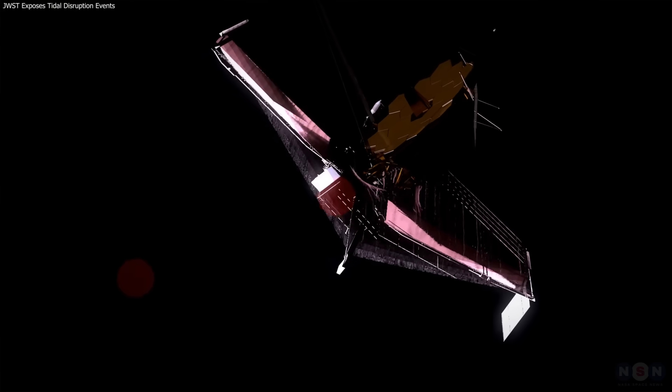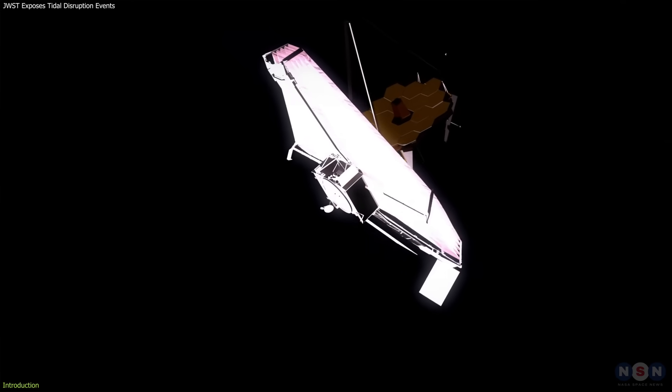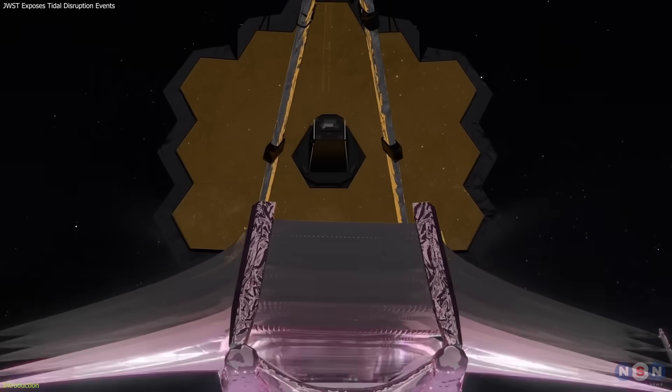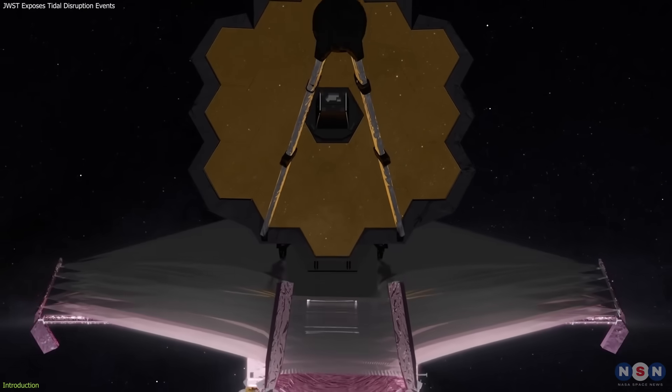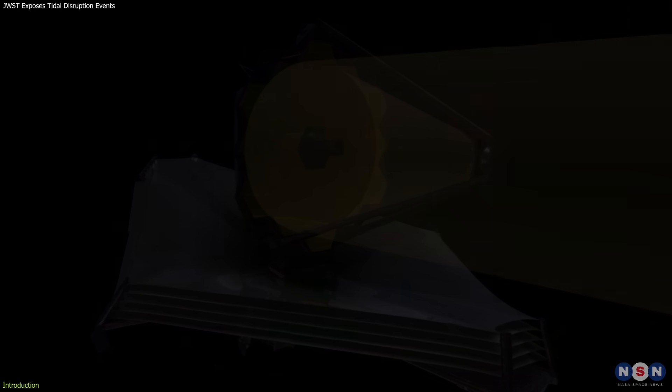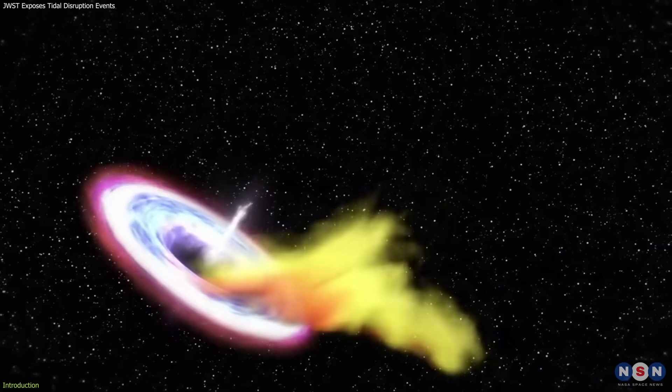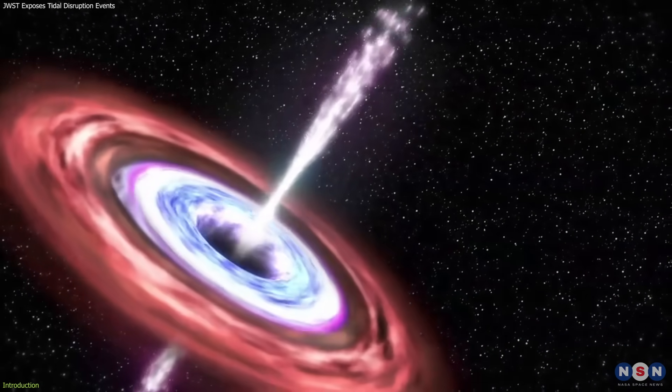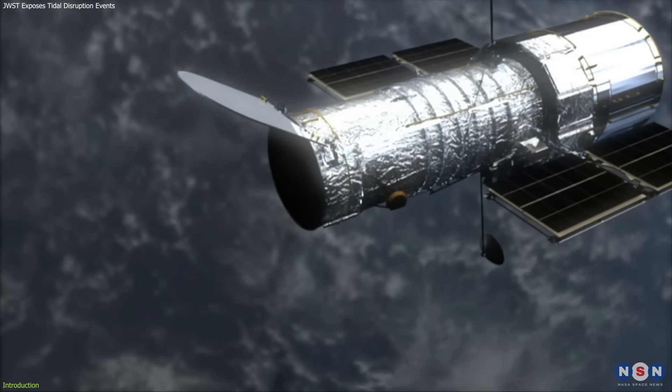After our previous JWST black hole series, here's the latest. Astronomers have used JWST's infrared eyes to spot dormant black holes flaring to life by shredding passing stars, events hidden from older telescopes.